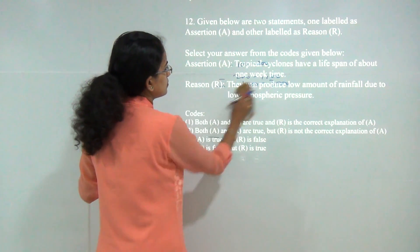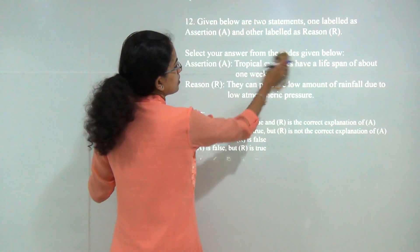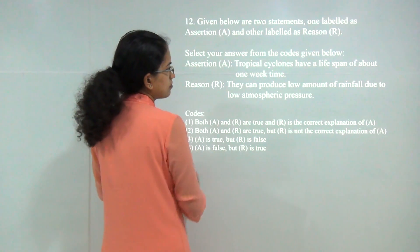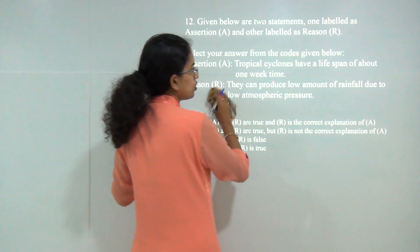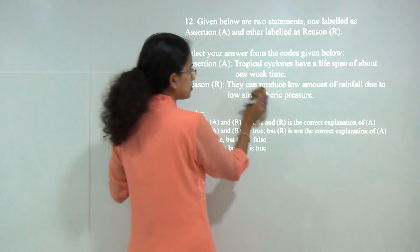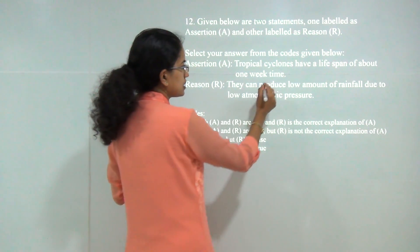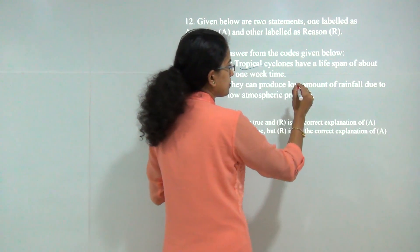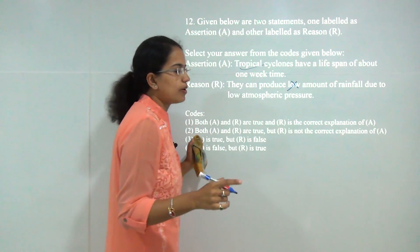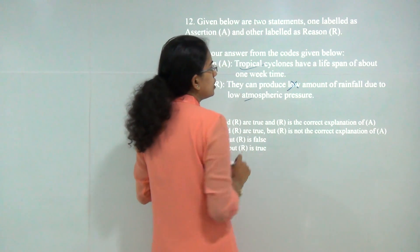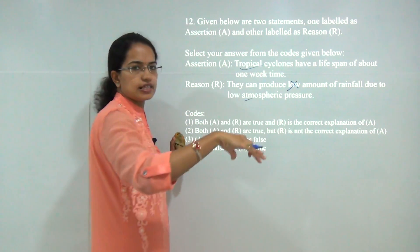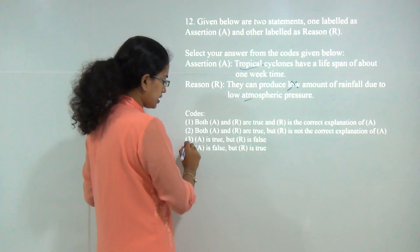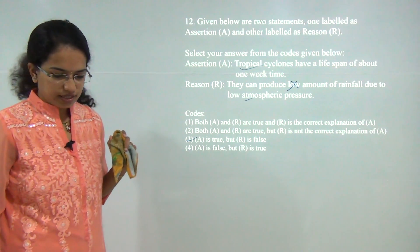Next question: tropical cyclones have a lifespan of about a week. They can produce a low amount of rainfall due to low atmospheric pressure — that is incorrect, because tropical cyclones produce a huge amount of rainfall, and that is due to the low pressure area that has been created. So the assertion is correct and the reason is incorrect, so 3 would be the answer.